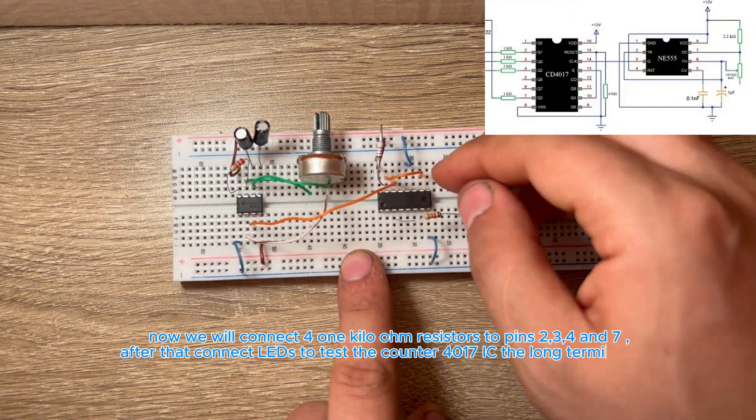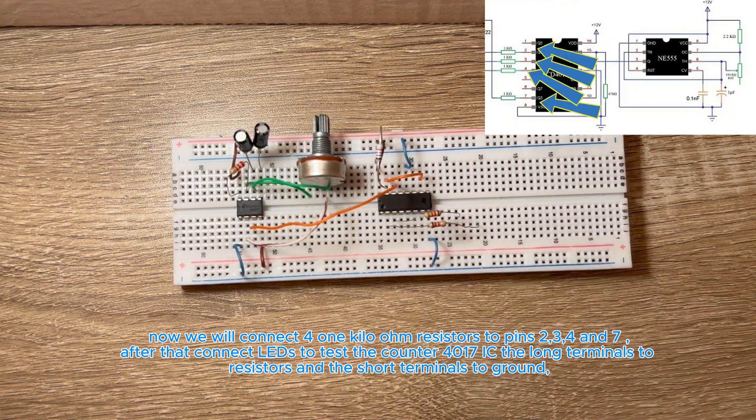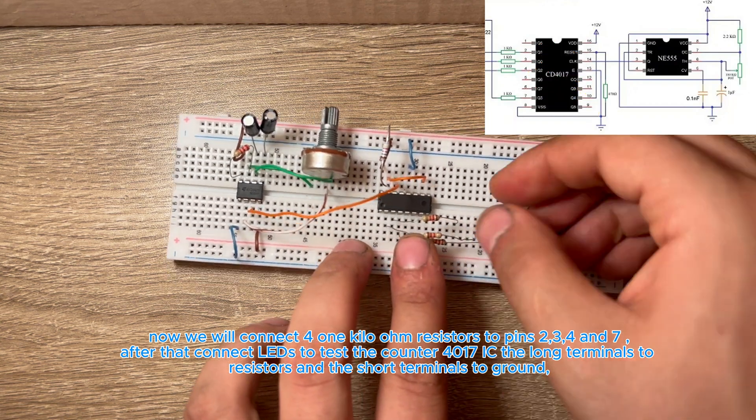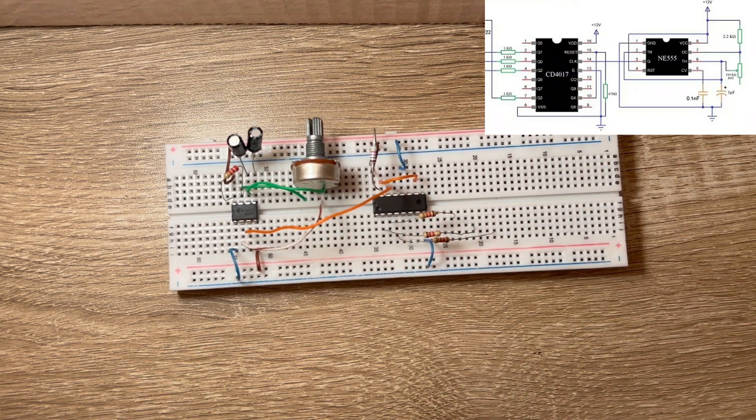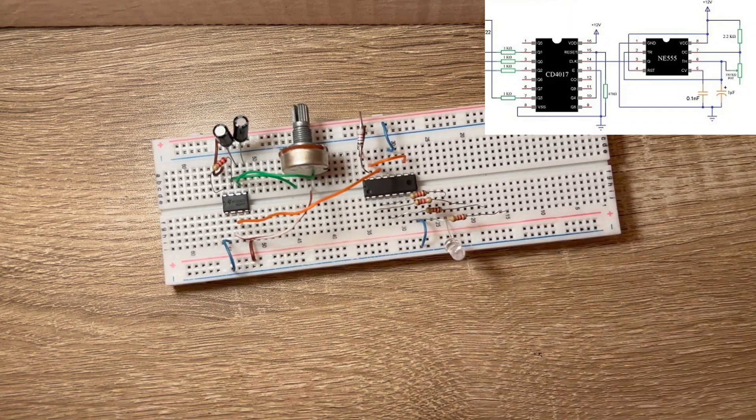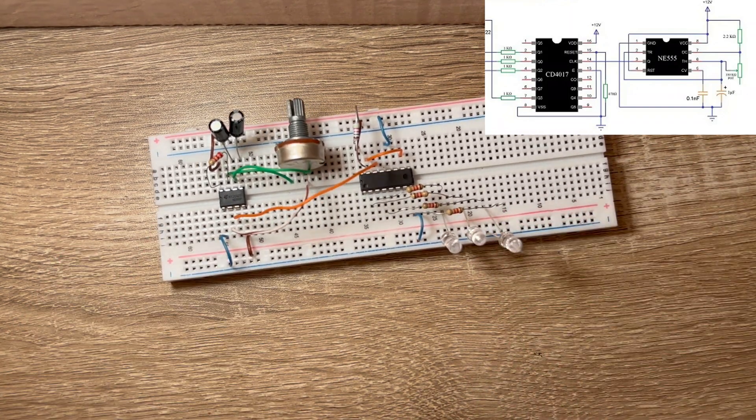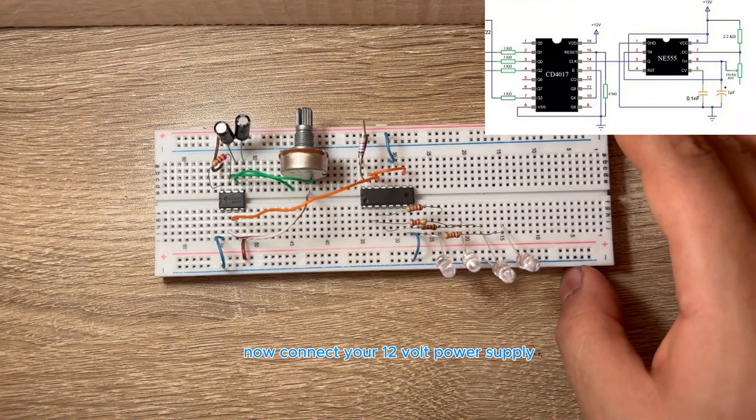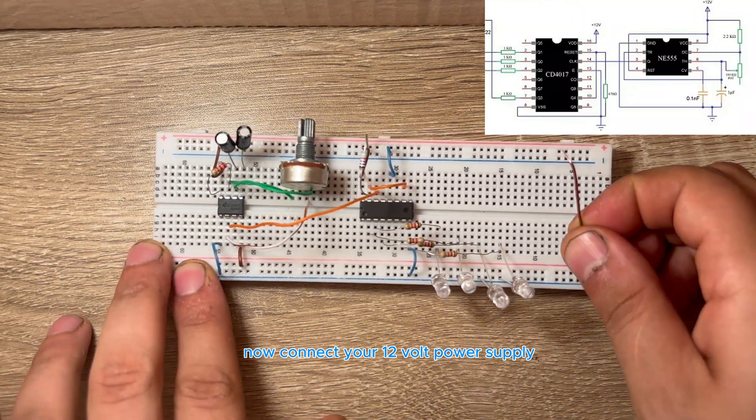Now we will connect 4 1 kilo ohm resistors to pins 2, 3, 4, and 7. After that, connect LEDs to test the counter 4017 IC, the long terminals to resistors and the short terminals to ground. Now connect your 12V DC power supply.